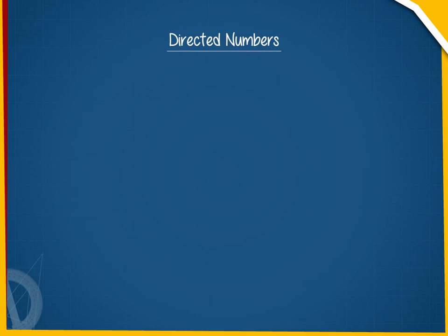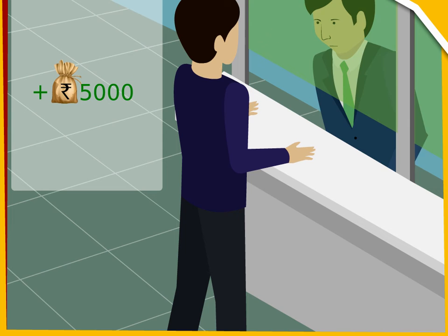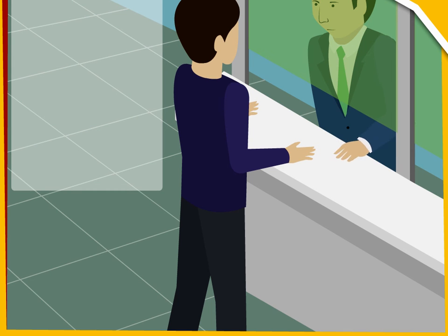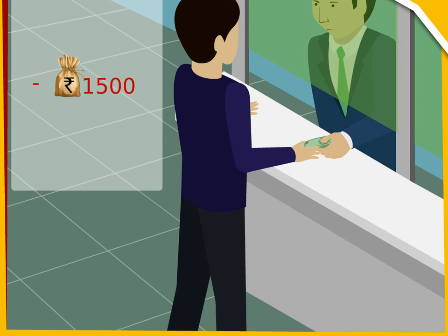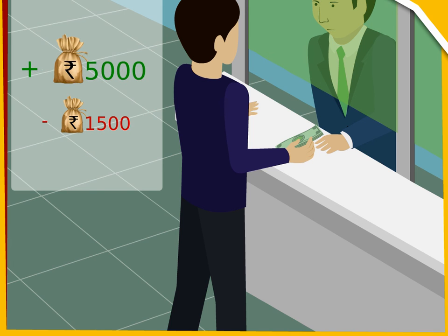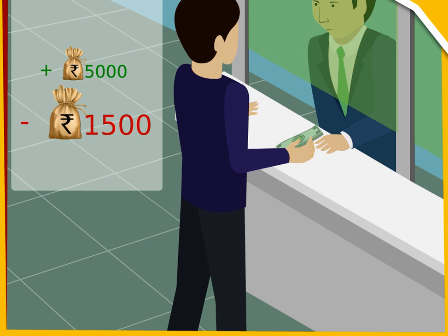Let us consider an example. Raj deposits 5,000 rupees in a bank. After a few days, he withdraws 1,500 rupees from the bank. We represent them as Directed Numbers: plus rupees 5,000 and minus rupees 1,500 respectively.